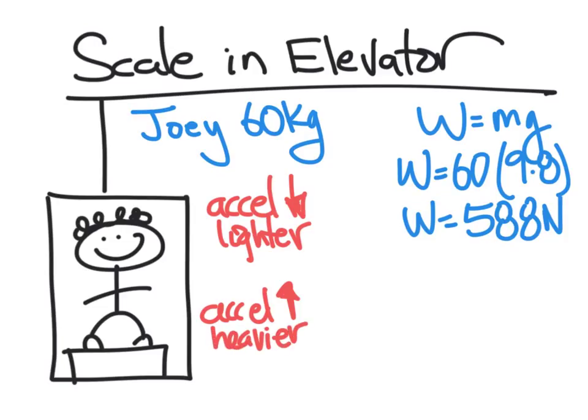So what this means is that we call this apparent weight, and this is going to be the reading on the scale. If Joey is accelerating upwards, the reading on the scale will be more than 588 newtons, and if he's accelerating downward, the reading on the scale will be less than 588 newtons.